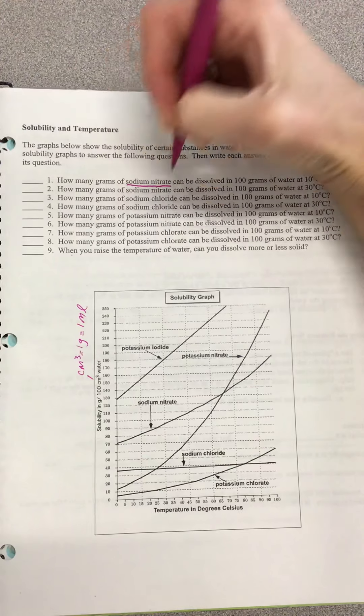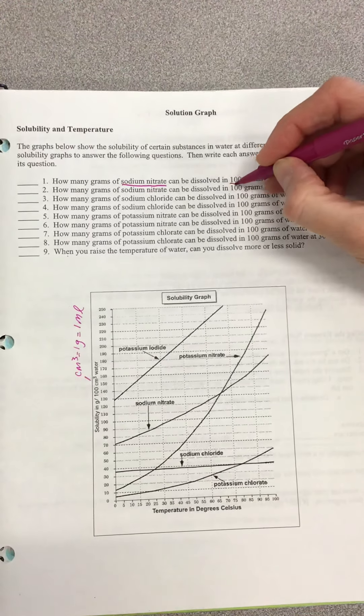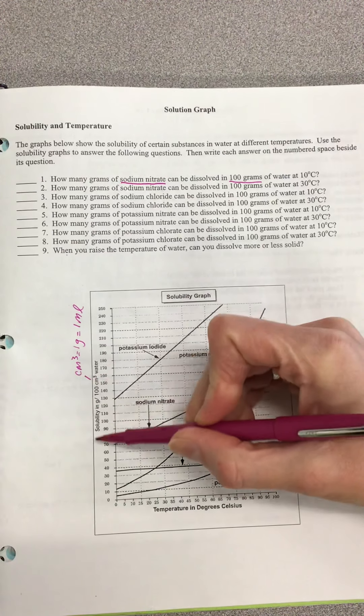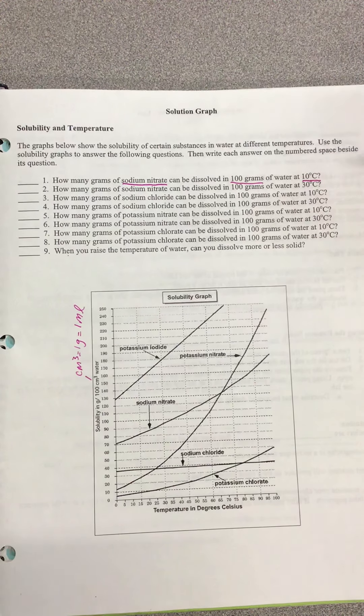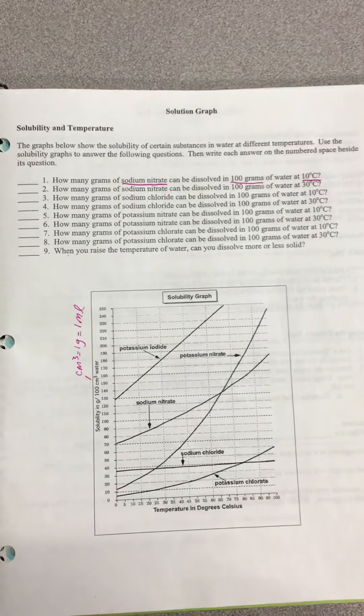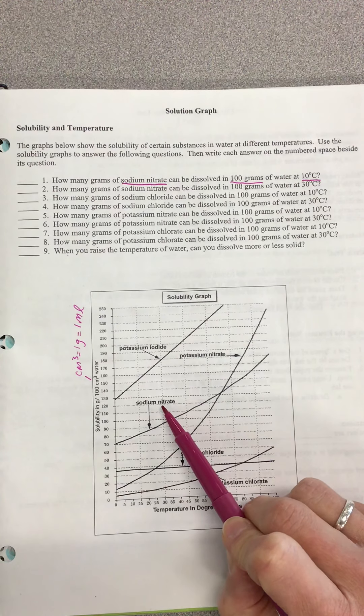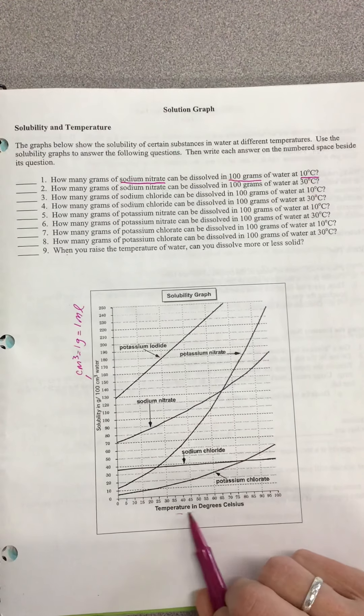If we look at number one, it says how many grams of sodium nitrate? As I'm doing this, I would want to make sure I'm doing my critical read. Sodium nitrate can be dissolved in 100 grams—there's our 100 grams. It's basically telling us we're using the correct graph at 10 degrees Celsius. So first, we want to find sodium nitrate, which is right here.